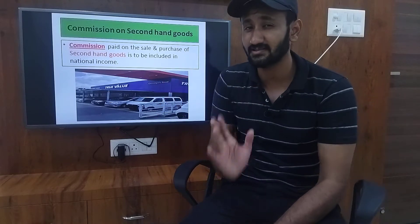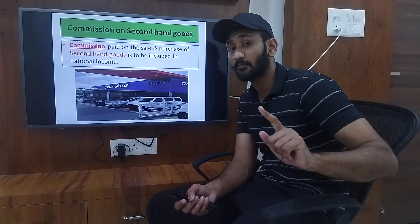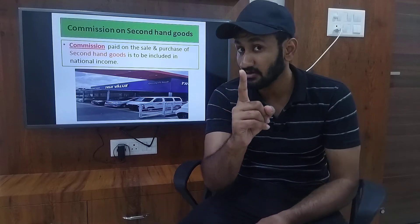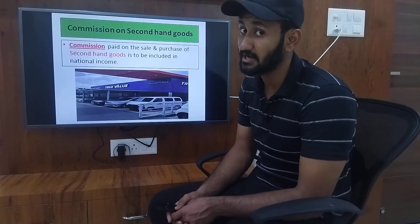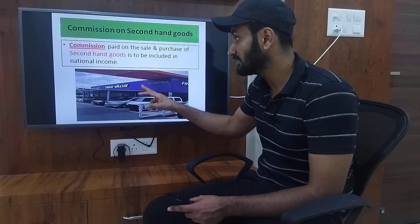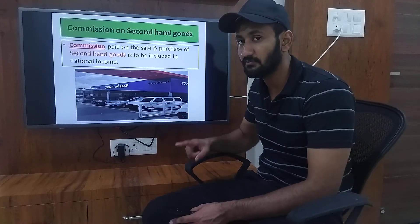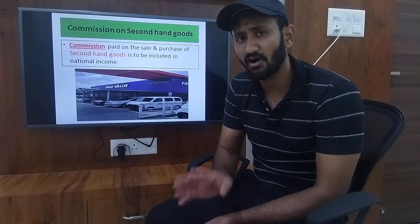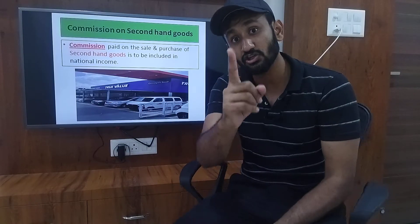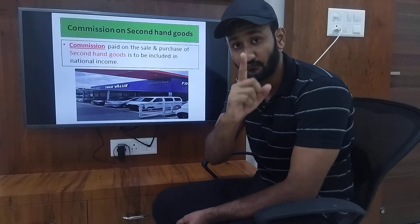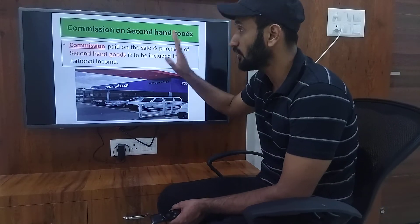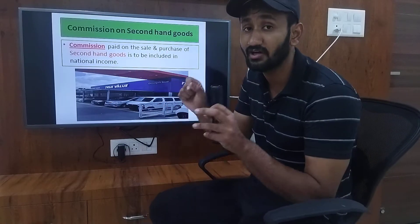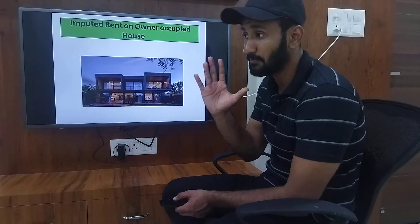The fifth precaution is also green — to be included. We already covered this in the precautions of value added method class. We saw there that the sale or purchase of second-hand goods does not come into national income, but the commission charged — like True Value or Mahindra First Choice charging 15,000 commission on selling a second-hand car for 3 lakh — that commission does come into national income. So commission paid on the sale and purchase of second-hand goods is to be included in national income.